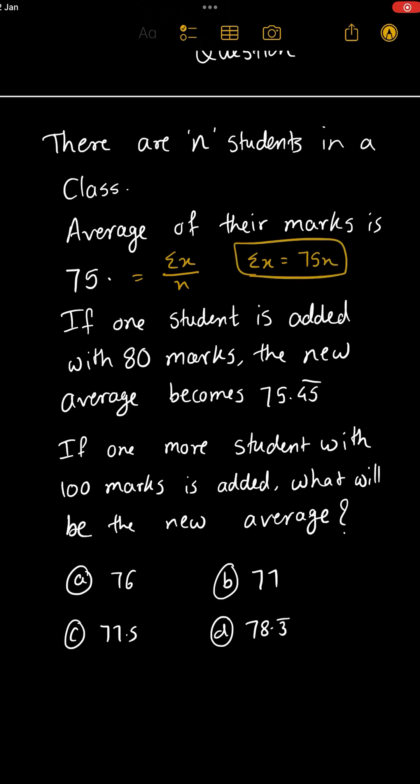If one student is added with 80 marks, then the new average becomes 75.45 recurring. If one more student with 100 marks is added, what will be the new average? First try by yourself, then let's solve.